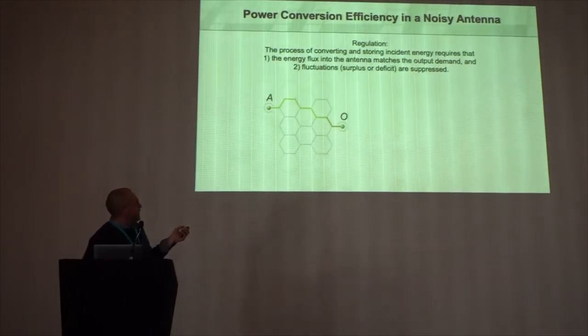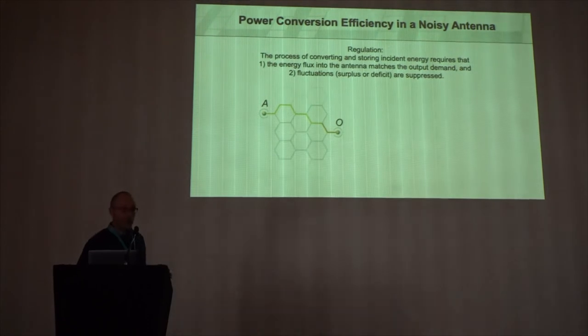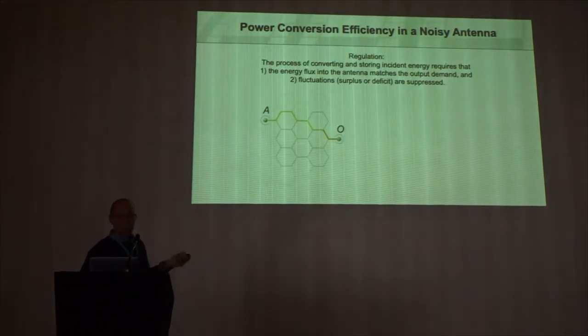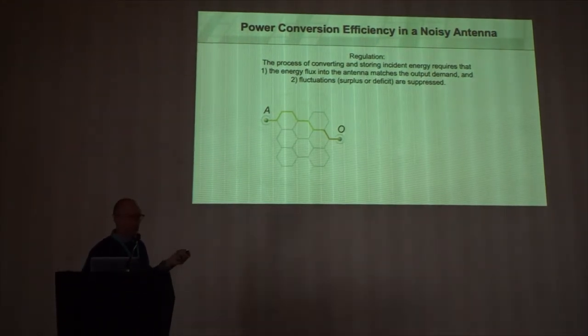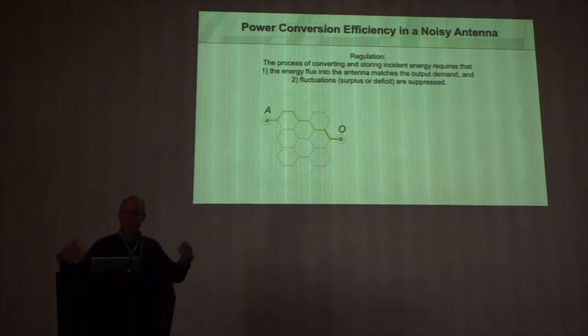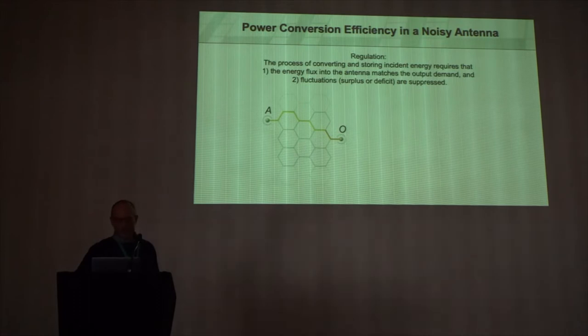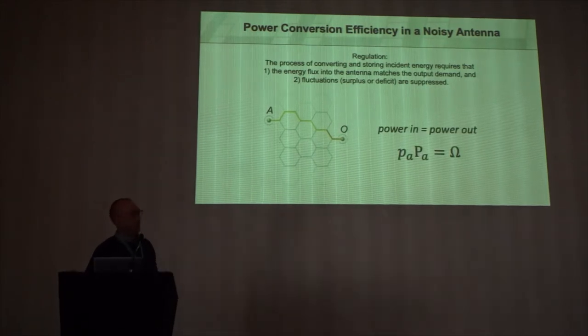And so when I write down this model, I can think of A as my pigment. So I take light in. So this is what's taking light in from the solar energy. And then I have some output that's doing work. It's doing some chemistry. It's a very simple model. And I'm only going to give you two equations in this whole entire talk.